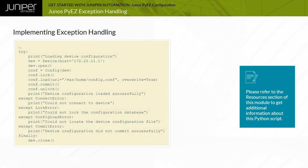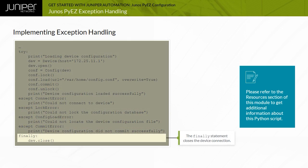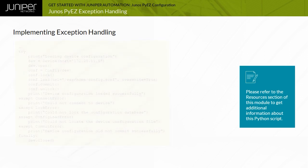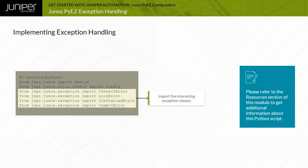Whether or not exceptions are encountered, the operations in the finally block are executed. This example script demonstrates importing the individual interesting exceptions from the jnpr.junos.exception module.